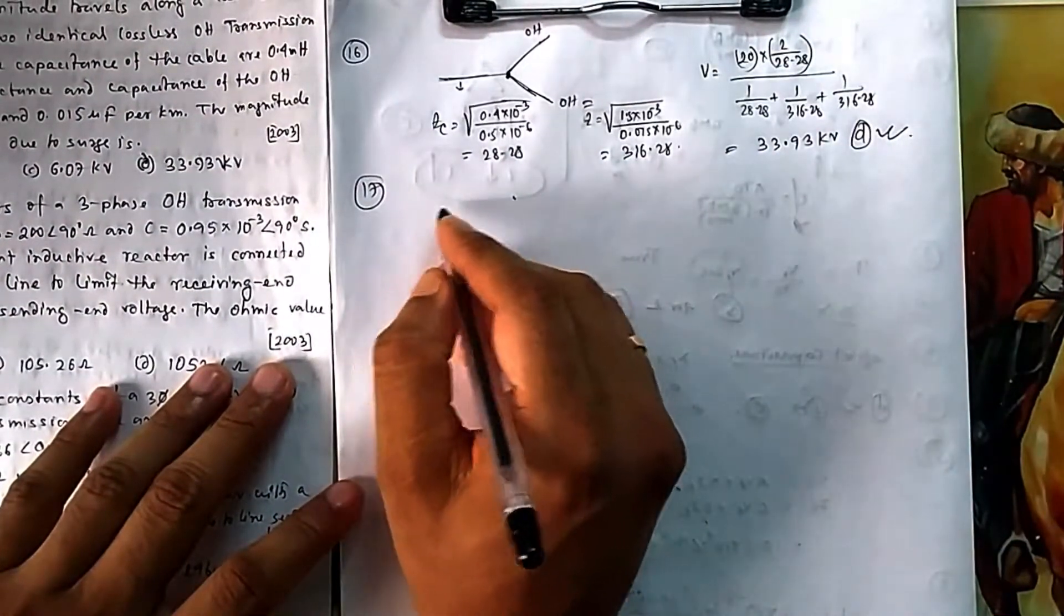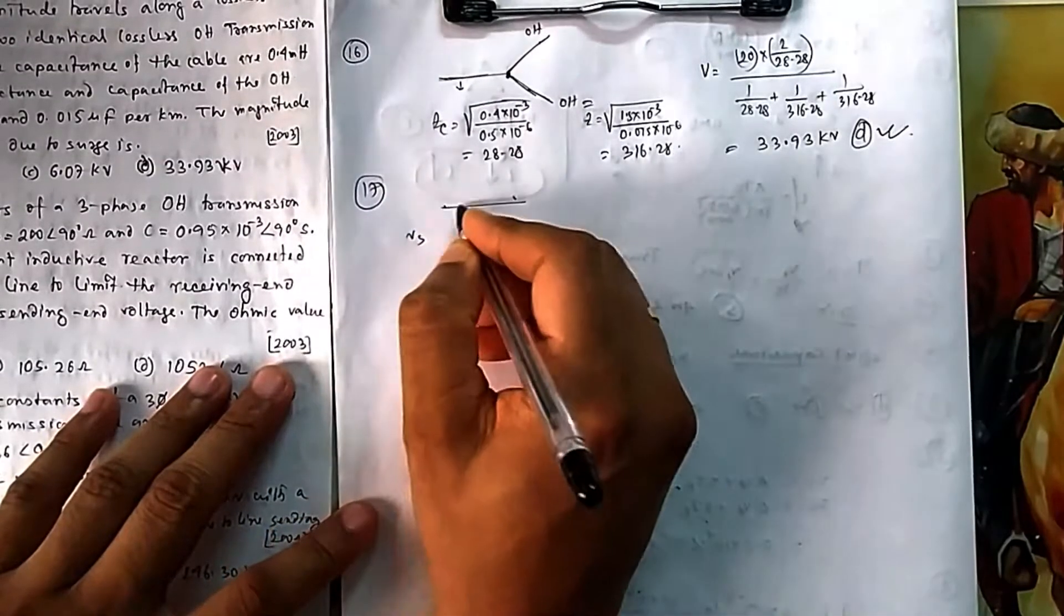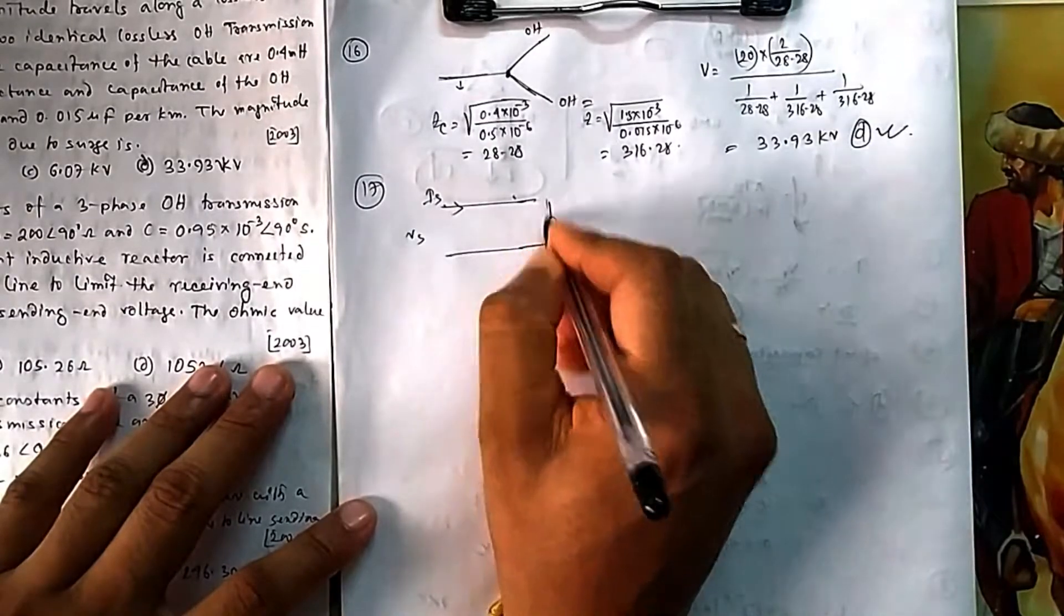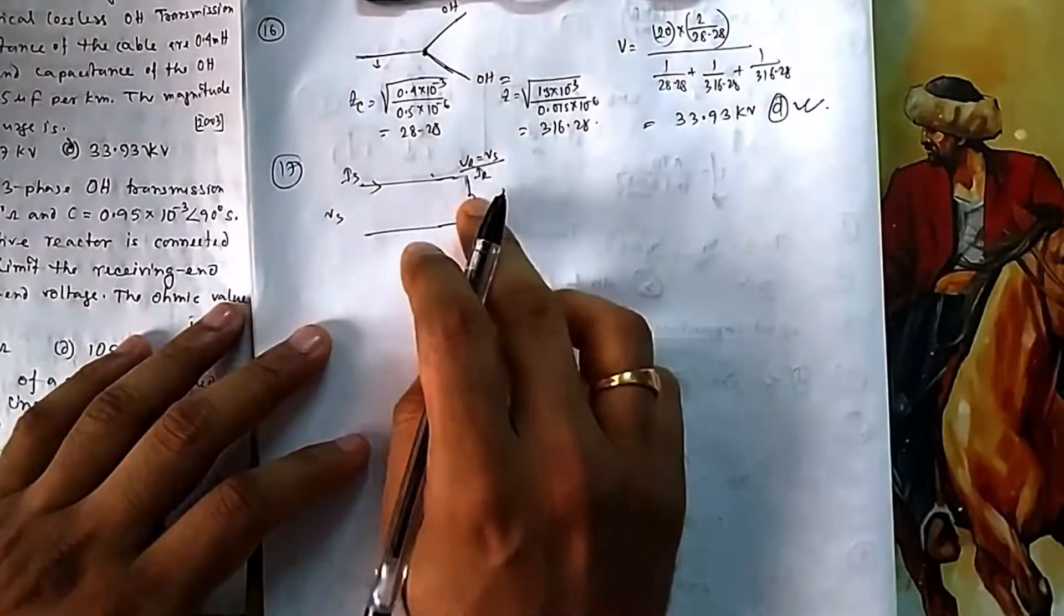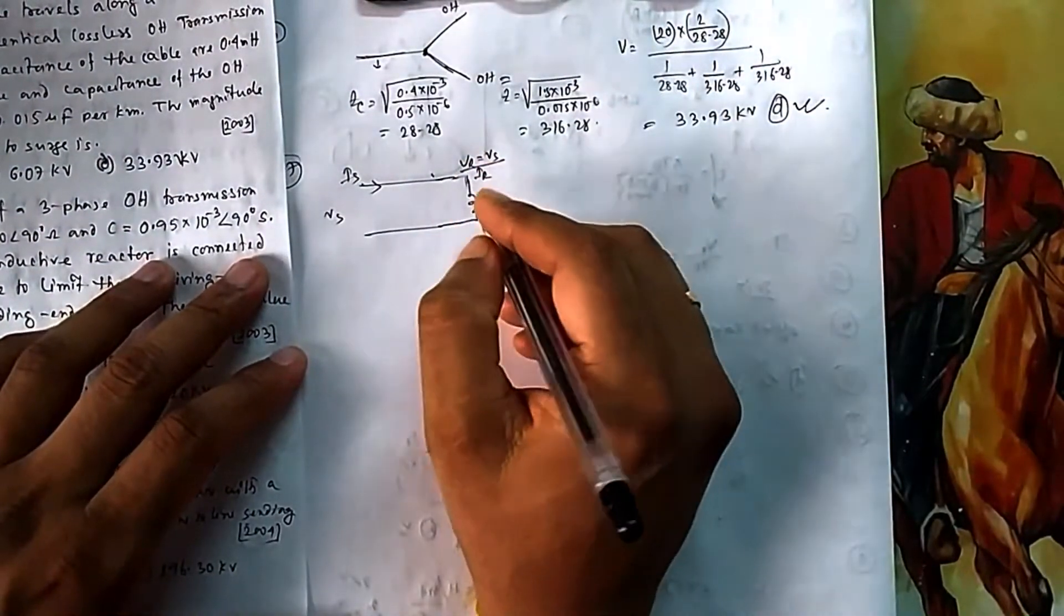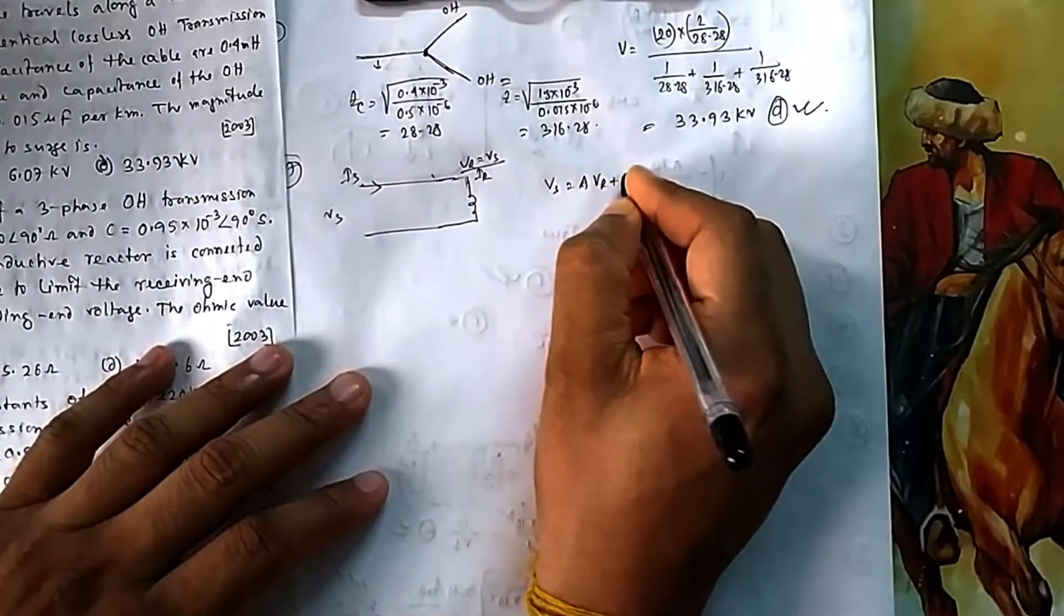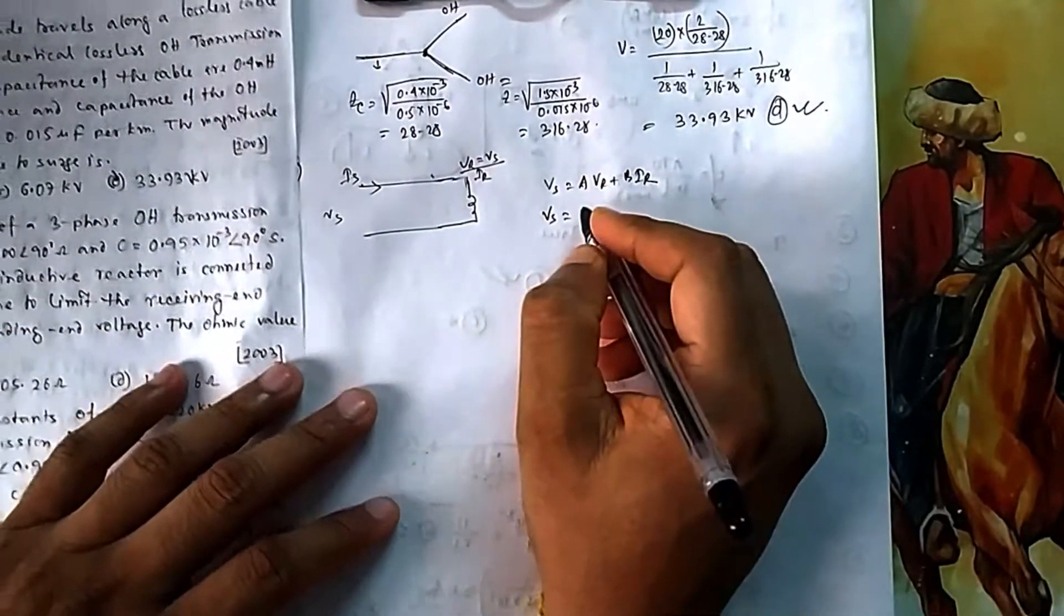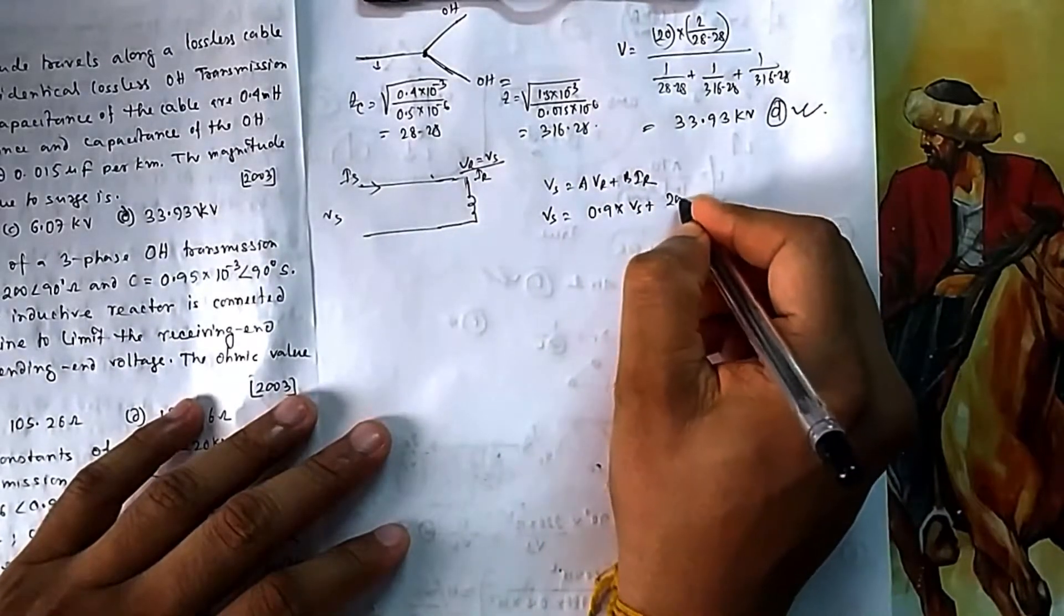At the receiving end, they are connecting a shunt reactor. Equal means not only magnitude but also angle - Vs equals Vr with angle. So this is Vs and this is Vr connected with a shunt reactor. The reactors are connected so your sending and receiving end voltages should be the same value.